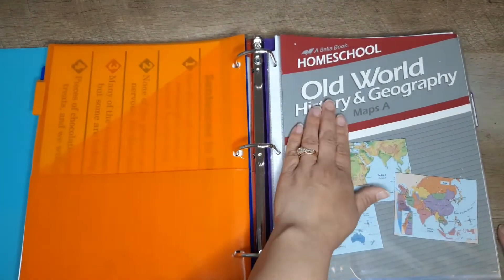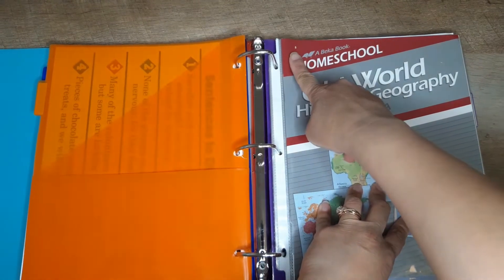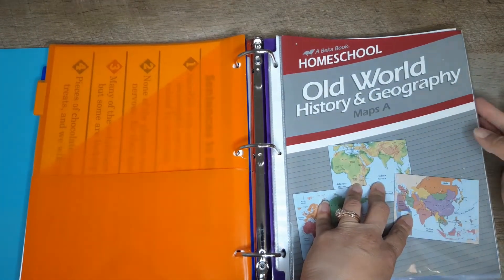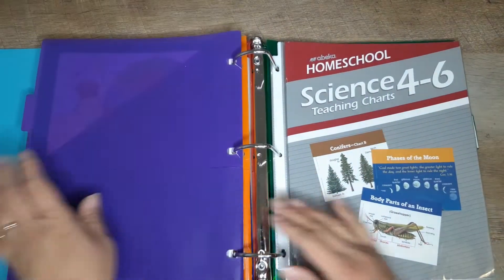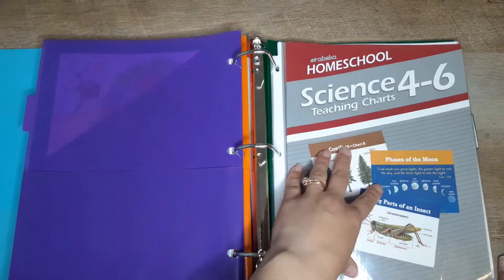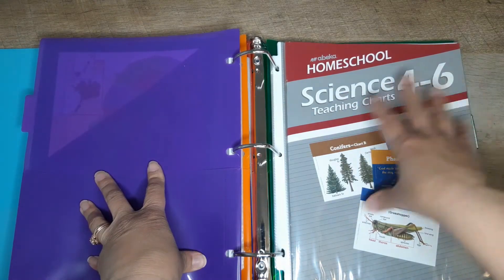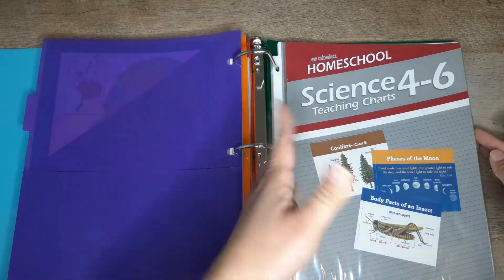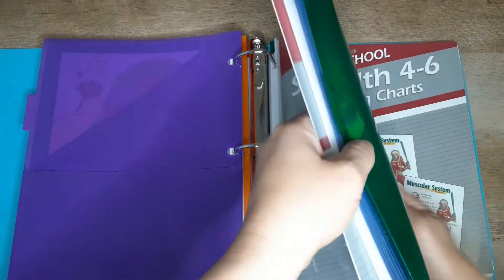You have old world history and geography charts, and this is just for use with fifth grade. You have your science teaching charts and that's for use for fourth or sixth grade. What I like about Abeka is once you buy the charts, you have them for a wide range of grades. I don't have to keep buying charts over and over again.